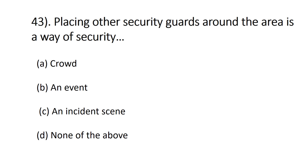Question number forty-three: placing other guards around the area is a way of — A) crowd control, B) event management, C) incident scene management, D) none of the above. The right answer is C, an incident scene, because to protect the incident scene, security guards can be deployed around the area.